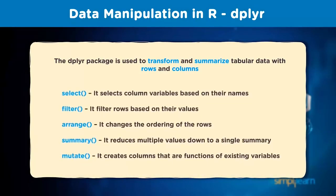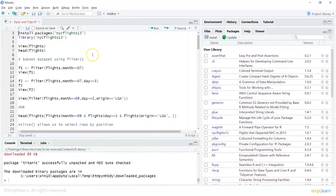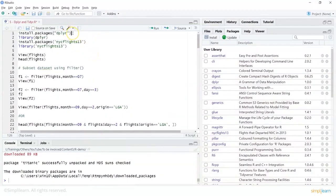dplyr can be used for grouping data, summarizing the data, adding new variables, selecting different sets of columns, filtering datasets, sorting, arranging, or even mutating — that is, creating new columns using functions on existing variables. So let's see how we work with dplyr.